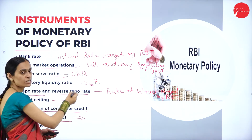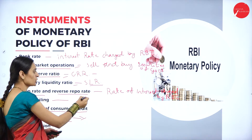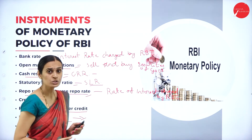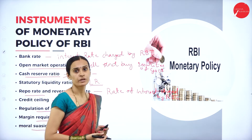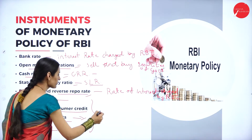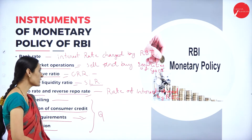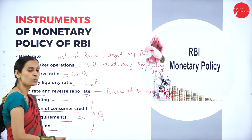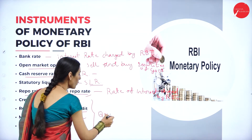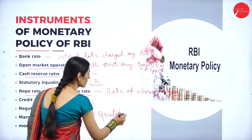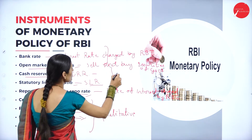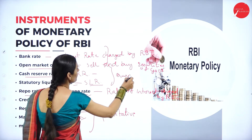Bank rate, open market operations, cash reserve ratio, statutory liquidity ratio, repo rate and reverse repo rate belong to quantitative measures. Credit ceiling, regulations of consumer credit, margin requirements, and moral suasion belong to qualitative measures.